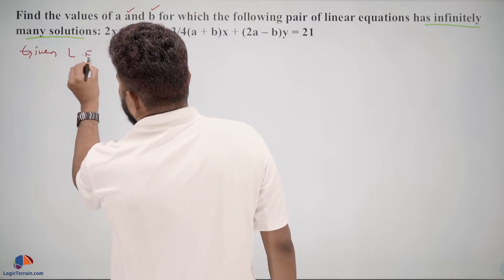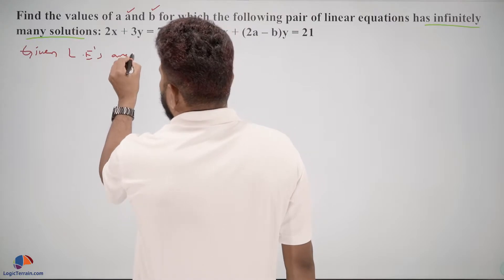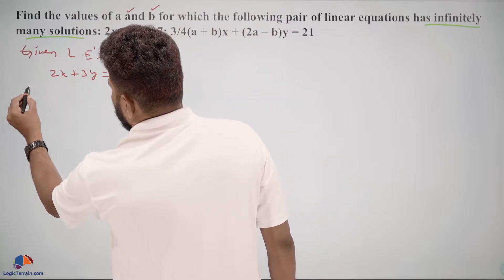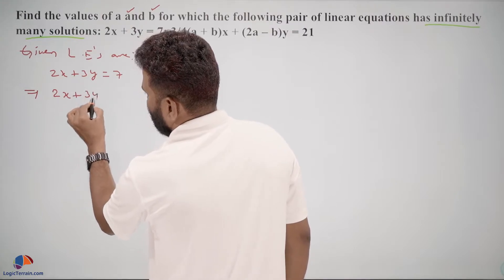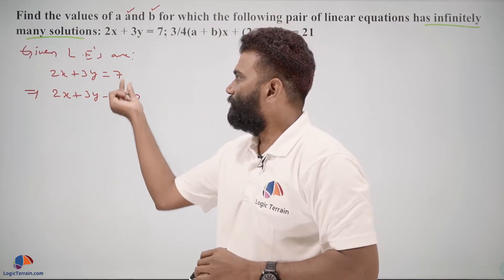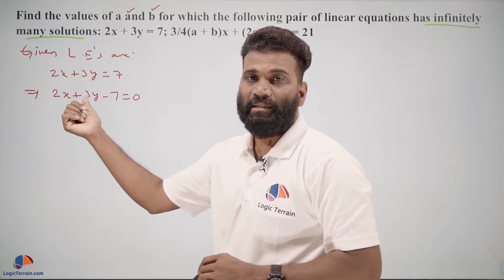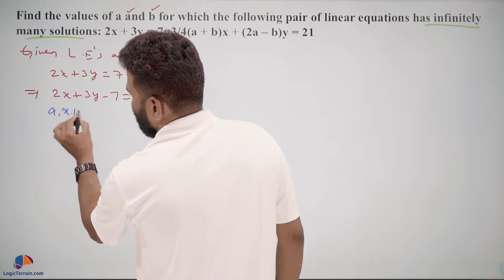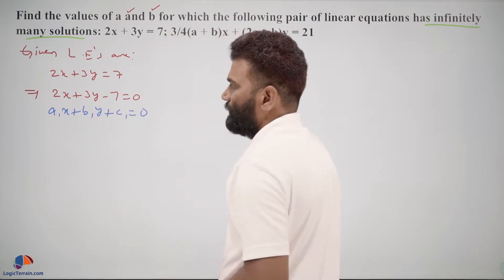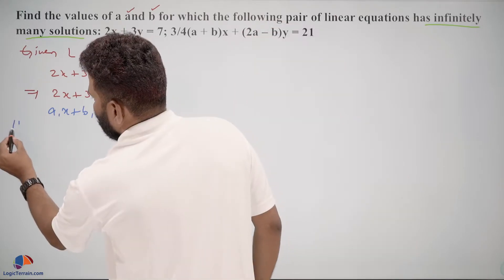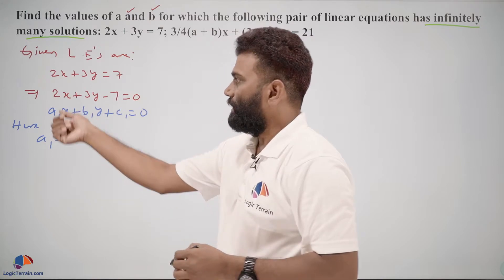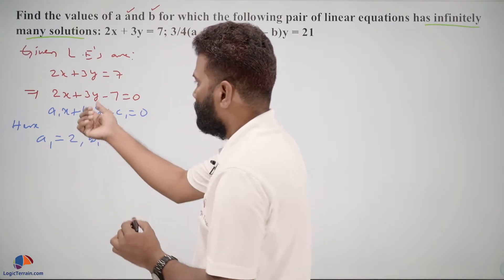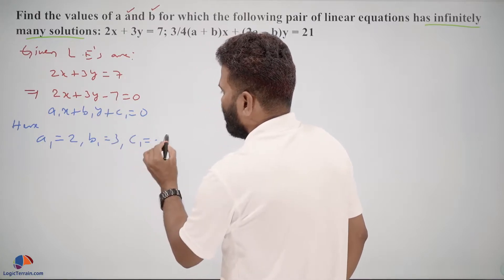The given linear equations are: first, 2x plus 3y is equal to 7. If we rewrite this equation, it becomes 2x plus 3y minus 7 is equal to 0, to get it into the general form a1x plus b1y plus c1 equals 0. So here, a1 is the x-coefficient which is 2, b1 is the y-coefficient which is 3, and c1 is equal to negative 7.